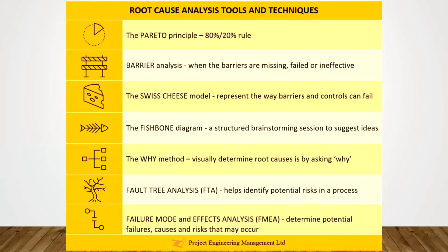and it's to help focus on the most important things using the 80-20 rule. The next one is barrier analysis. When an undesirable event occurs, when the barriers are missing, failed, or ineffective, and the source of the harm reaches the target. The Swiss cheese model represents the way barriers and controls might fail.